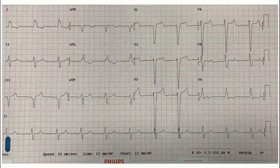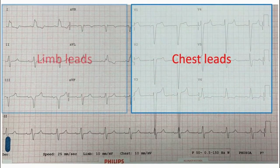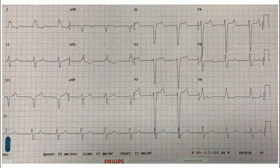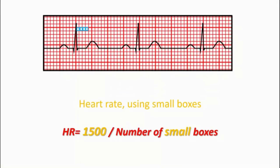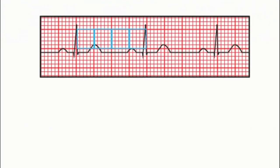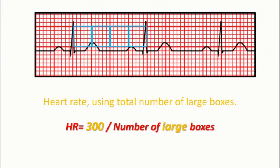In the previous video, we learned about various leads on ECG with regular rhythm and I talked about how we can calculate heart rate easily when rhythm is regular. There were two methods: if we want to use the small boxes, the formula is heart rate equals 1500 divided by the total number of small boxes between peaks of two RR waves. And if we want to use the large boxes, the formula is heart rate equals 300 divided by the number of large boxes between peaks of two consecutive RR waves.